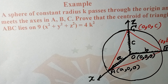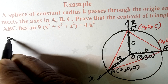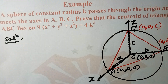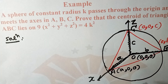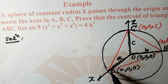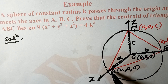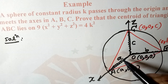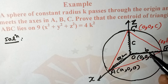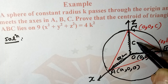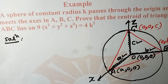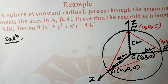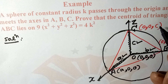The sphere has constant radius and meets the axes in A, B, C. We suppose that the x-intercept is small a, y-intercept is small b, z-intercept is small c. Then point A is (a, 0, 0), point B is (0, b, 0), and point C is (0, 0, c).